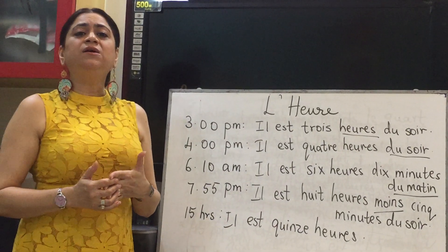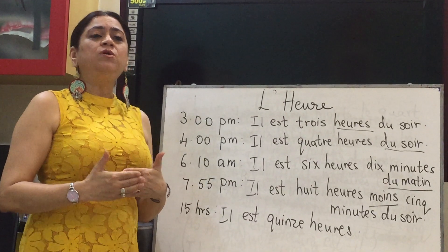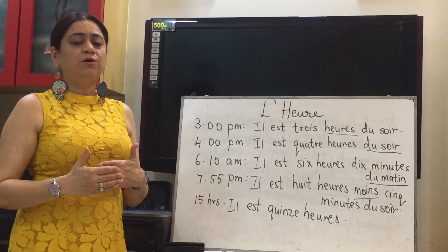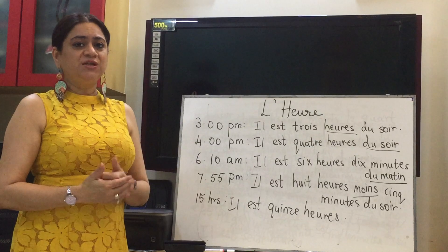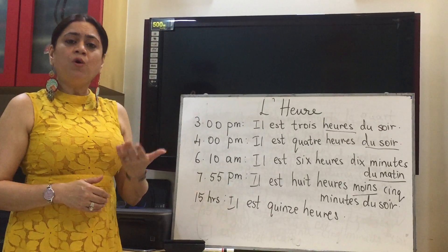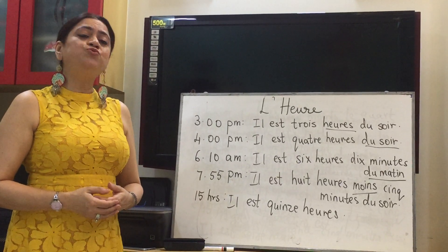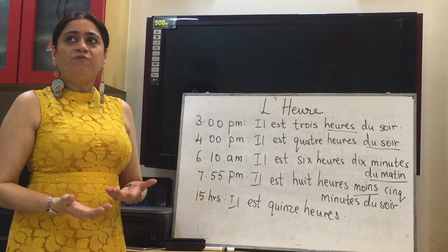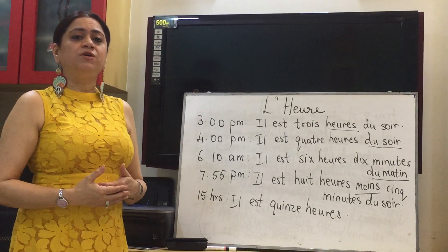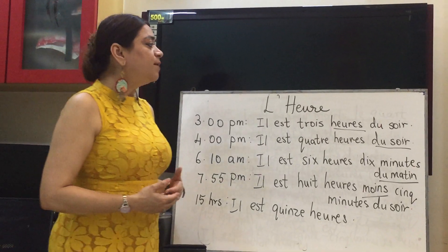We begin our class on learning the time in French. We need to keep in mind that whenever we express any timing, the word 'heures' has to be used along with the time expressed. So if it is two o'clock we say 'deux heures,' and if it is five o'clock we say 'cinq heures.'